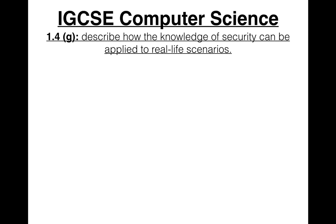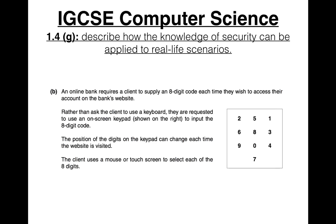Let's use our knowledge of security to answer a past paper question. This is from the 2015 May-June exam, paper one. An online bank requires a client to supply an eight-digit code each time they wish to access their account on the bank's website. Rather than asking the client to use a keyboard, they are requested to use an on-screen keypad, shown on the right, to input the eight-digit code. The position of the digits on the keypad can change each time the website is visited, and the client uses a mouse or touch screen to select each of the eight digits.